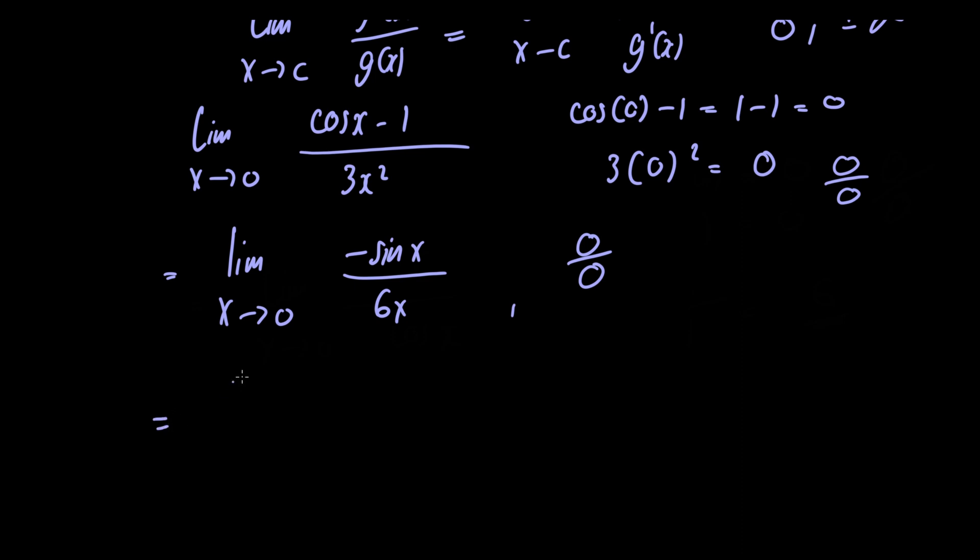So doing that, we have the limit as x approaches 0 of minus cosine of x divided by 6. Now notice if we let x tend to 0, we would have minus 1 in the numerator and 6 in the denominator, and this is our final answer.